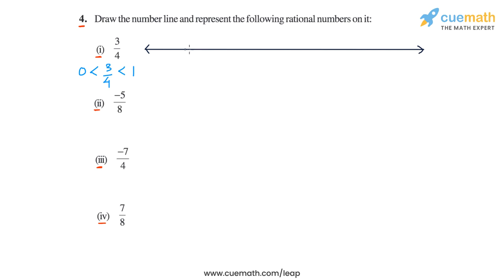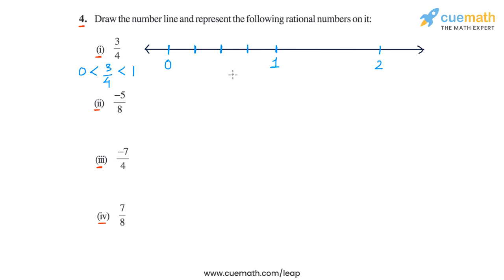Let's draw a number line and make integer markings on it. So let's say this is 0, this is 1, this is 2, and so on. Now 3 by 4 will lie in the interval between 0 and 1. To plot 3 by 4, let's divide this interval into four equal parts. You can first divide it into two equal parts by plotting the midpoint of 0 and 1, and then divide each half into two equal parts again.